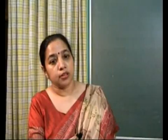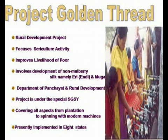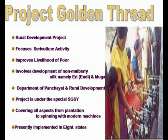Then we have what is called Project Golden Thread. It is a rural development project that focuses on sericulture activity and improves livelihoods of the poor. It involves development of non-mulberry silk, namely eri or munga. The Department of Panchayat and Rural Development looks after it. The project is under the special SJSY scheme, covers all aspects from plantation to spinning with modern machines, and has presently been implemented in eight states.